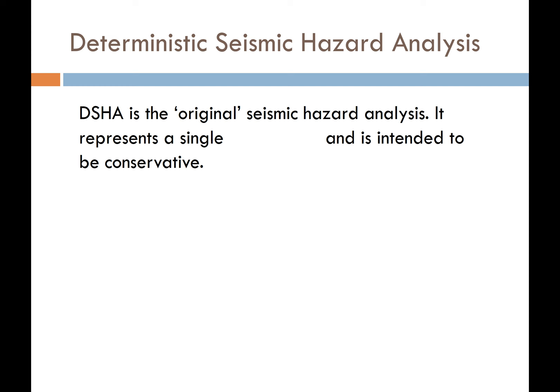In essence, what we do with the DSHA is we represent a single scenario earthquake. The idea with the scenario earthquake is we're trying to be conservative. There are lots of assumptions we need to make regarding a scenario earthquake — how big is it going to be, where is it going to occur. In all of these different scenarios, we make assumptions that are going to give us larger ground motions, which is what I mean by conservative.